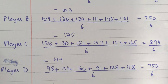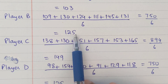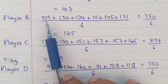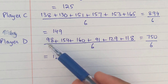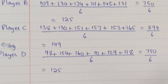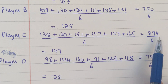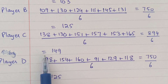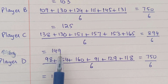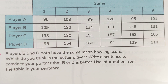For player B, the total is 750, and for player D, the total is also 750. So both player B and player D have the same mean. Although their individual scores are altogether different — player B scored 109, 130, 124, 111, 145, 131, while player D scored very low at times like 98 or very high at 154, 160. For player C, the total of 6 matches is 894, giving an average of 149 — the highest of all. So the highest mean belongs to player C.